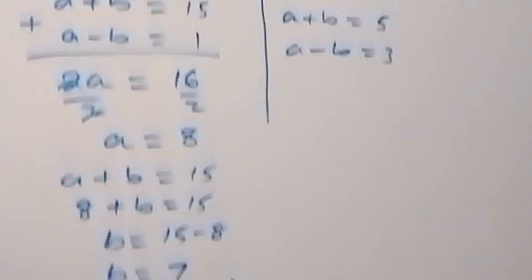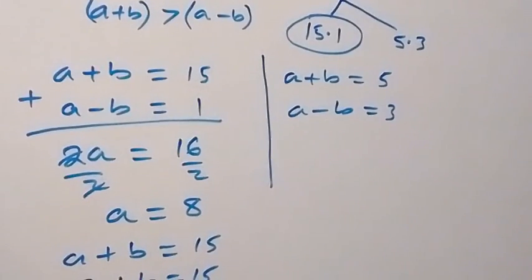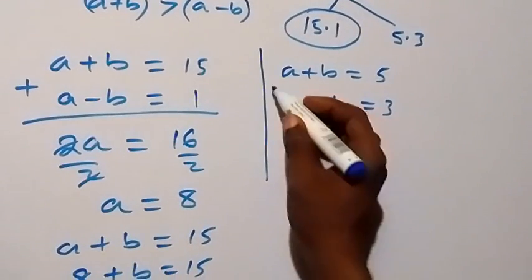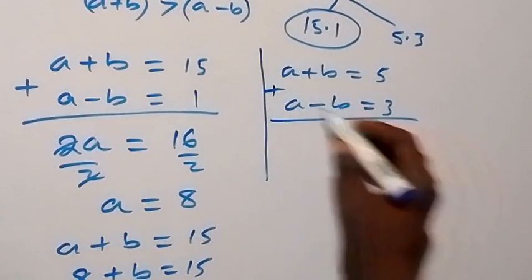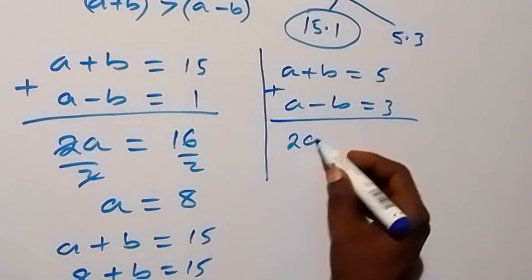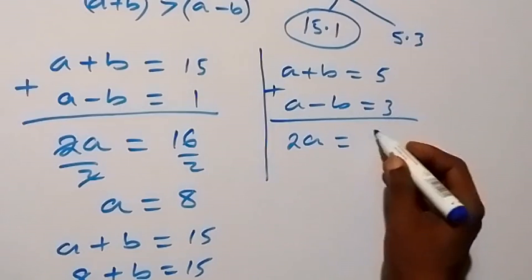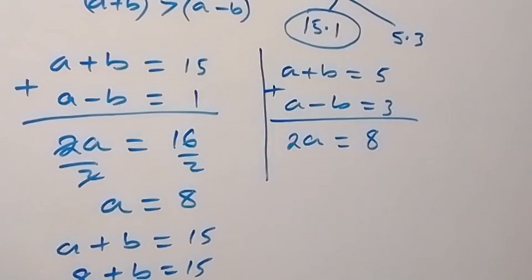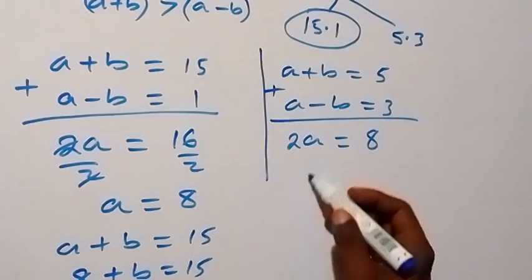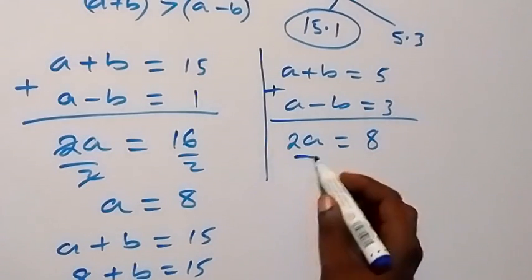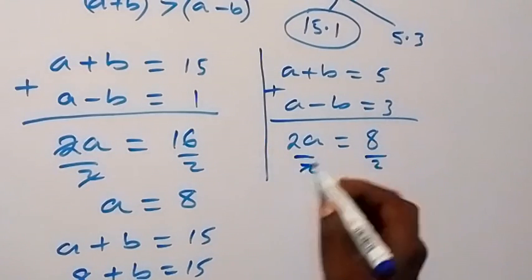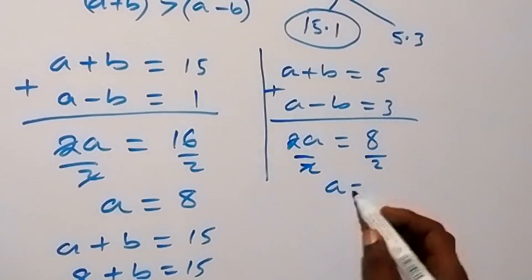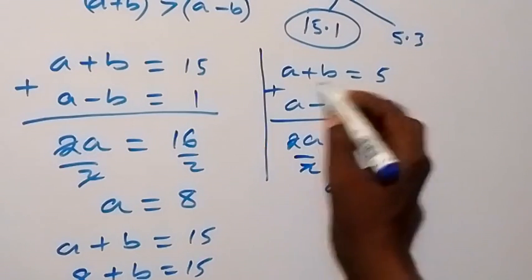From the second case, we also solve simultaneously. When we sum this, it gives us 2a equals 8. When we divide both sides by 2, we get a equals 4.